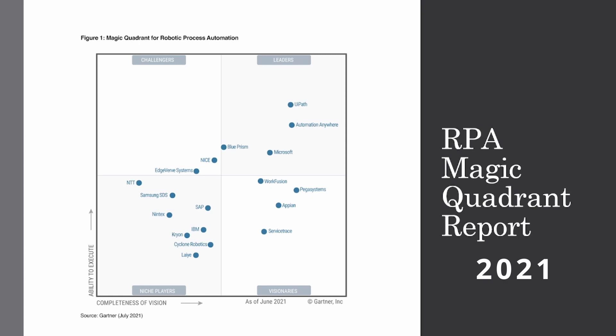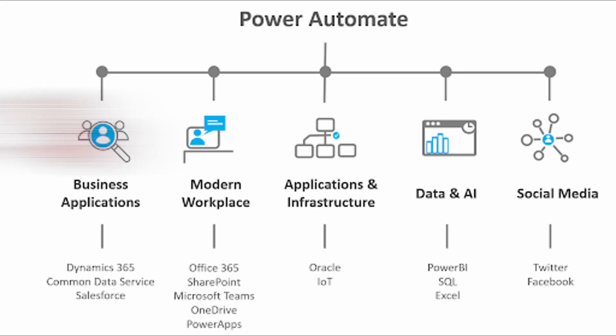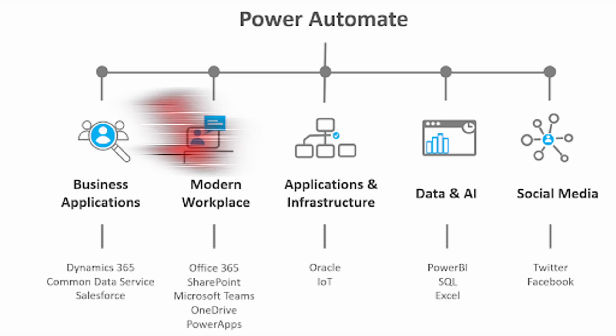What can we do with RPA technologies practically? How can it help us save time? Microsoft Power Automate can help us automate business applications such as Dynamics 365, Common Data Services, Salesforce, or Workday. We can automate anything we do in those applications. We can also automate anything regarding our modern workplace, such as Office applications like SharePoint, Microsoft Teams, OneDrive, Power Apps, and so on — the list just continues.